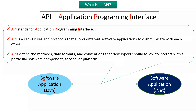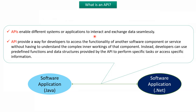Here you can see a software application developed using Java, and another software application developed using .NET. These applications can communicate with each other using API. API defines methods, data formats and conventions that developers should follow to interact with a particular software component, service, or platform.